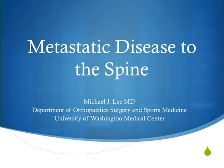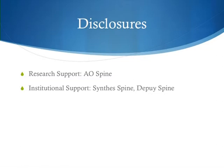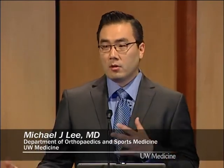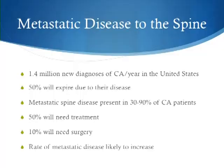So metastatic disease to the spine. For the benefit of residents and fellows, on our board examinations we're often quizzed on factoids regarding chordoma, osteosarcoma, giant cell tumors — things classically positioned in the spine in various locations — but the reality in practice is that the overwhelming majority of tumors we see in the spine are going to be metastatic disease: over 95 percent. In the United States there are roughly 1.4 million new diagnoses of cancer per year, and it's estimated that 50 percent of these patients will expire due to their disease. Of these, metastatic spine disease is present in 30 to 90 percent of patients depending on which study you cite. Of these, 50 percent will need some kind of treatment, and 10 percent are estimated to need surgery. As we get better in treating primary tumors and improving life expectancy, we can only expect the prevalence of metastatic disease to increase.